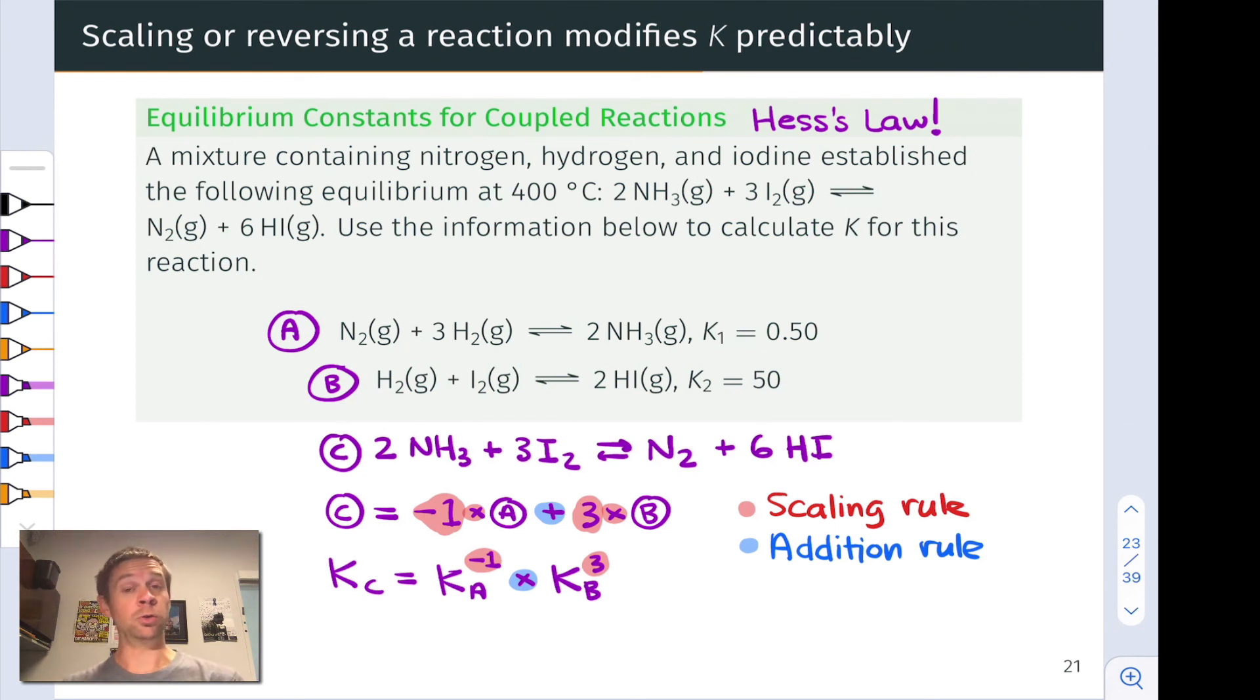And in multiplying reaction B by 3, we're going to cube K sub B. And so that's why these exponents appear. And sparing you all of the messy details of the math and all of the things that you can just plug into your calculator, I'll just say that the final result here comes out to 2.5 times 10 to the fifth power.